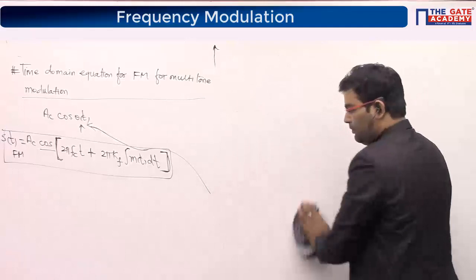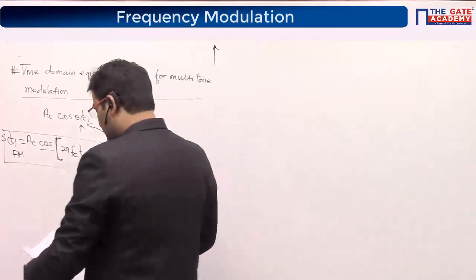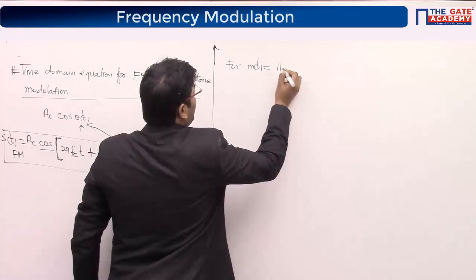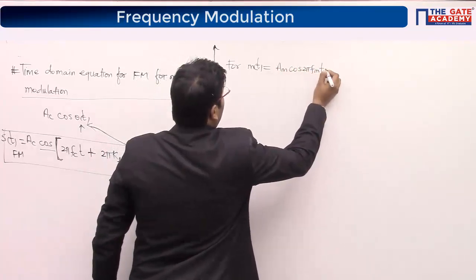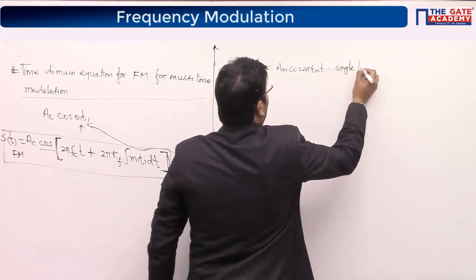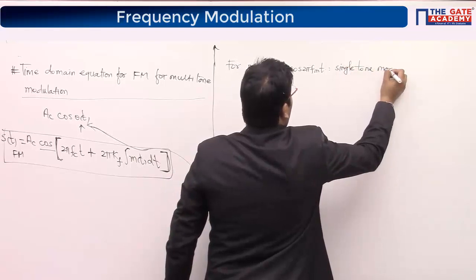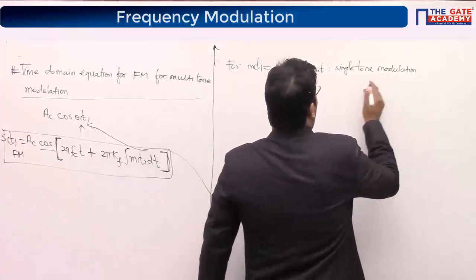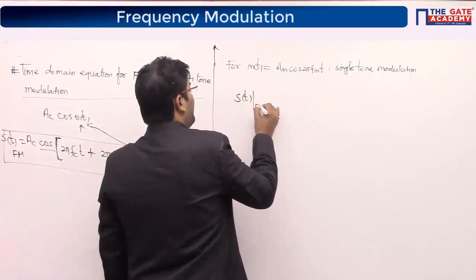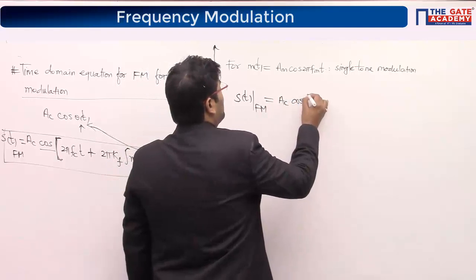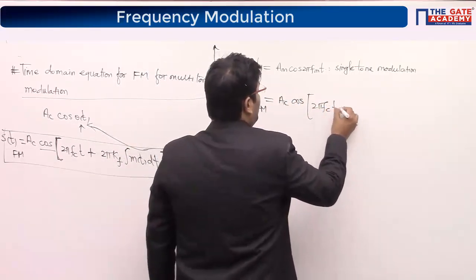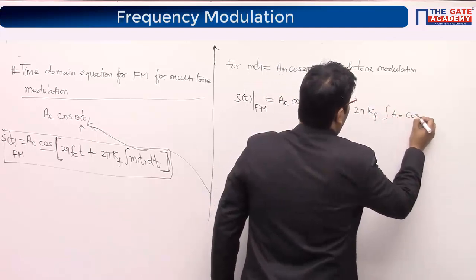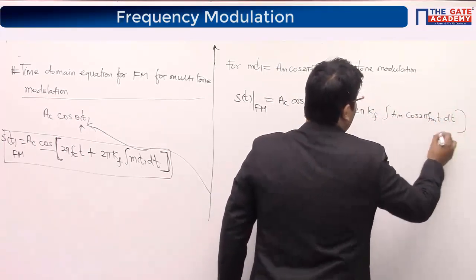Before that, let's do the same thing for single-tone modulation, where m(t) = Am·cos(2πfm·t). The FM signal is s(t)_FM = Ac·cos[2πfct + 2π·Kf·∫Am·cos(2πfm·t)dt]. Simplifying: integrating cosine gives sine divided by 2πfm, and the 2π terms cancel.